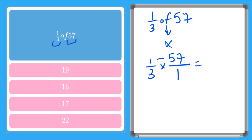And now I can multiply across my numerator. One times fifty-seven is fifty-seven. Across my denominator, three times one is three. So I have the improper fraction, fifty-seven thirds.